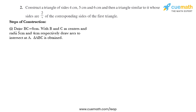Let's start with the steps of construction. Draw BC equals 6 centimeter. With B and C as centers, and radii 5 centimeter and 4 centimeter respectively, draw arcs to intersect at A, and triangle ABC is obtained.